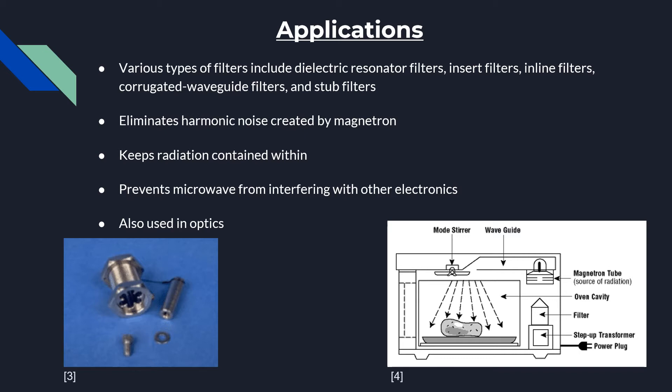For instance, broadcasting satellites operate on a frequency bandwidth in the range from 11.7 GHz to 12.7 GHz, while ovens operate at a frequency of 12 GHz to 12.5 GHz, resulting in interference. Another application involves optical waveguide filters, used to provide a means of bringing fiber optic cables into a shielded enclosure while maintaining the enclosure's radio frequency isolation integrity.